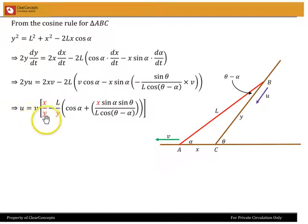V times [x/y - L/y into cos α + x sin α sin θ/(L cos(θ - α))]. Now you can do a little more simplification in terms of trigonometry, but just to let you know that right away in the problem we do not have the values x and y which are labeled in red.